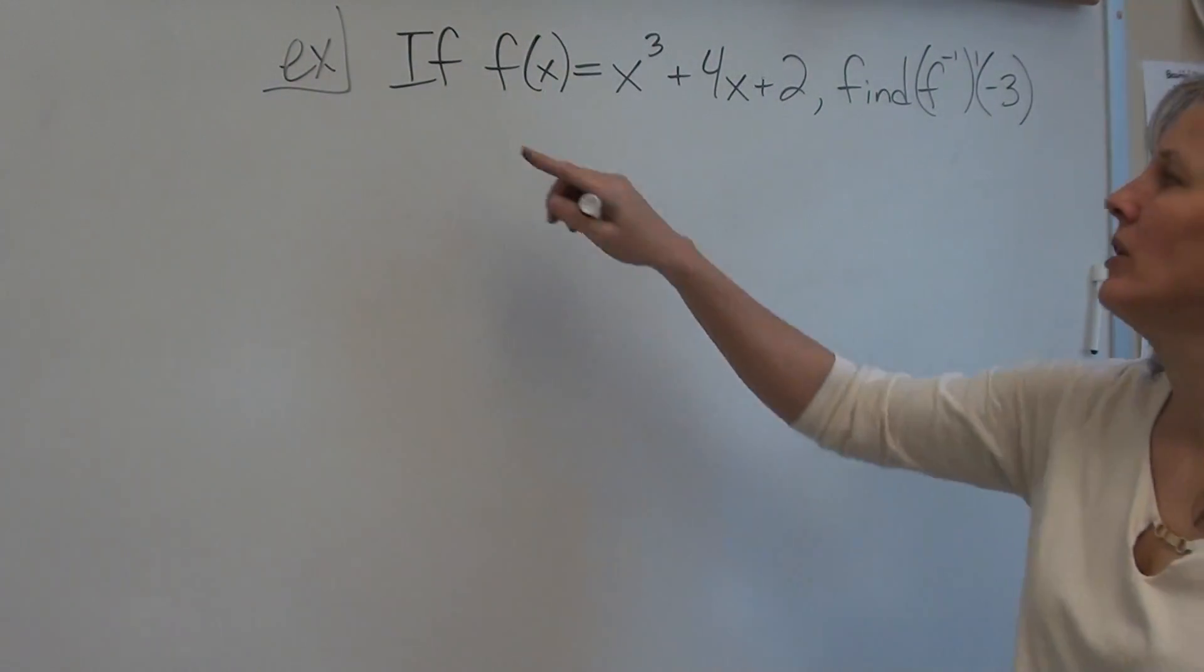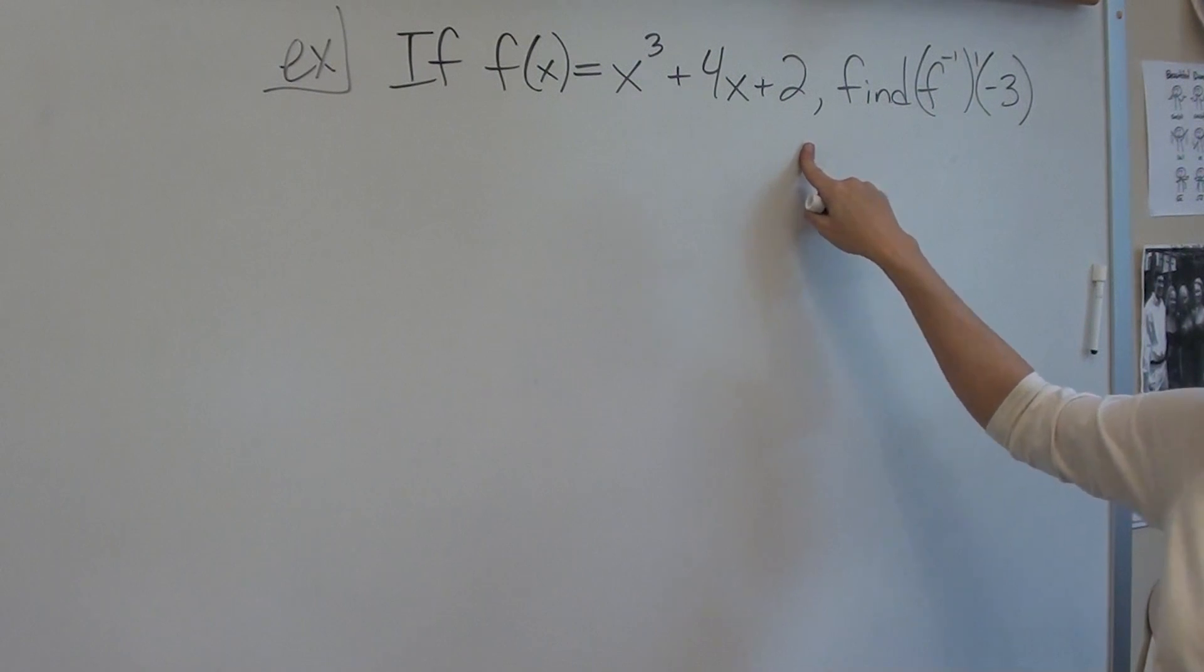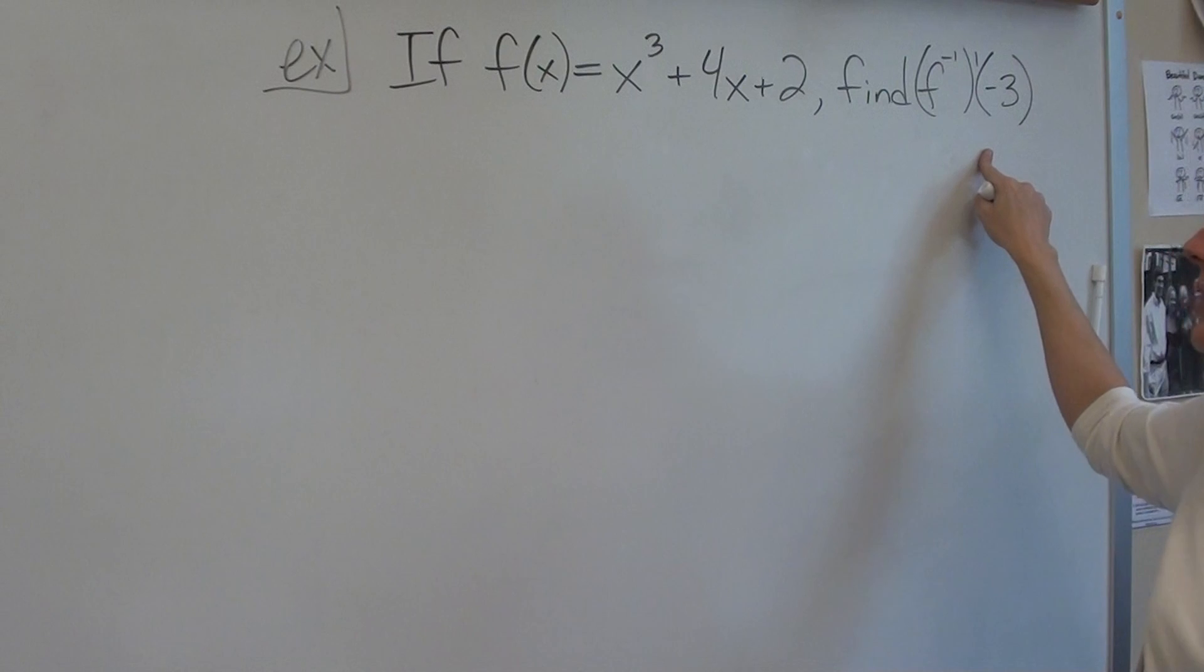Okay, so for our first example, suppose f of x equals x cubed plus 4x plus 2, and we want to find f inverse prime of negative 3.